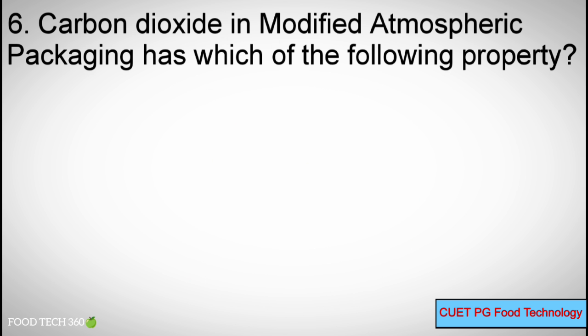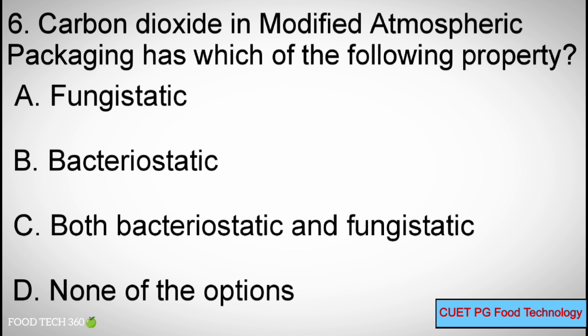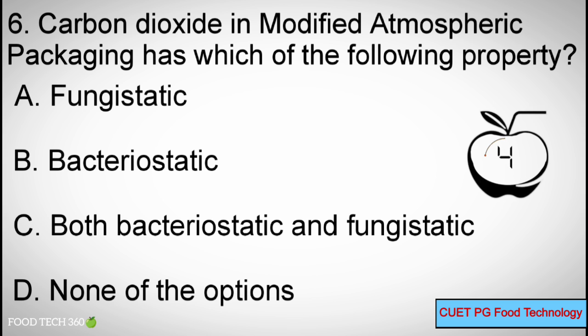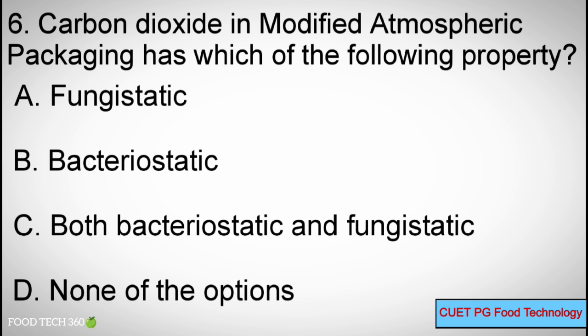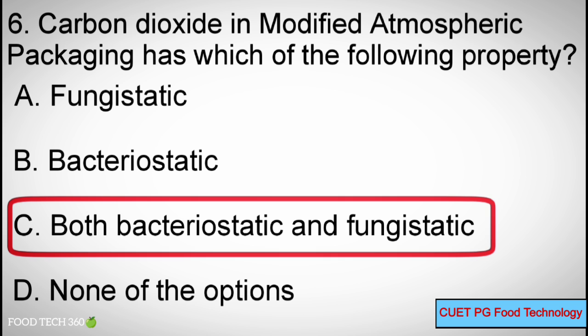Q6. Carbon dioxide in modified atmospheric packaging has which of the following property? A. Fungistatic. B. Bacteriostatic. C. Both bacteriostatic and fungistatic. D. None of the options. Correct answer: C. Both bacteriostatic and fungistatic.